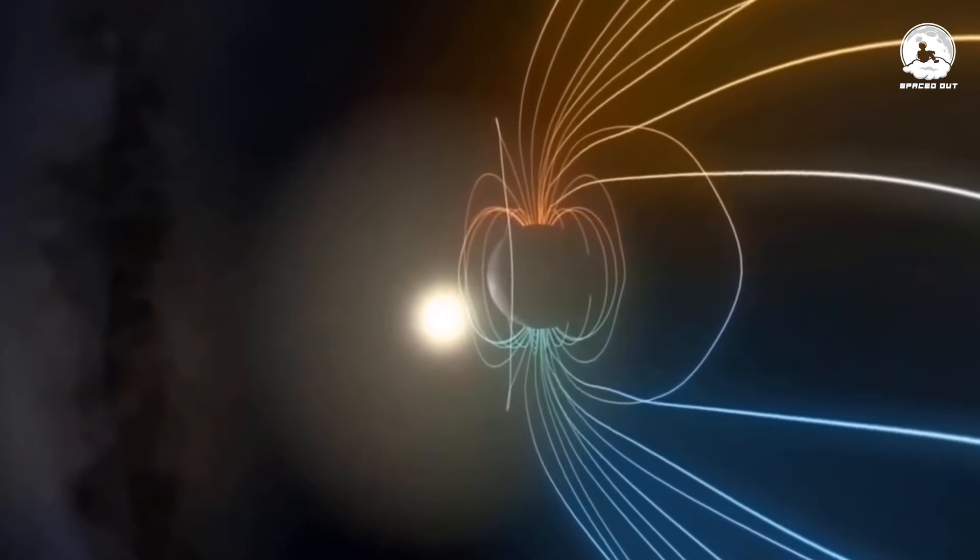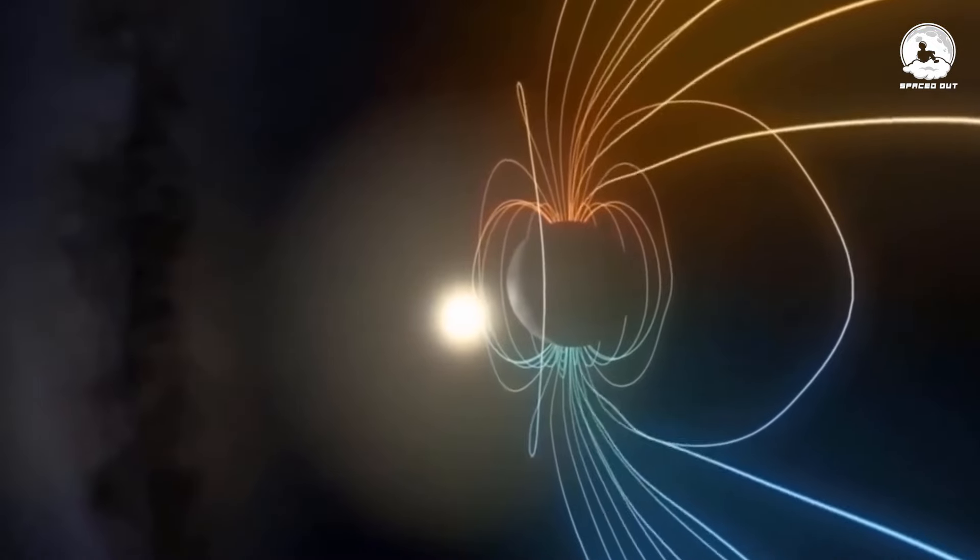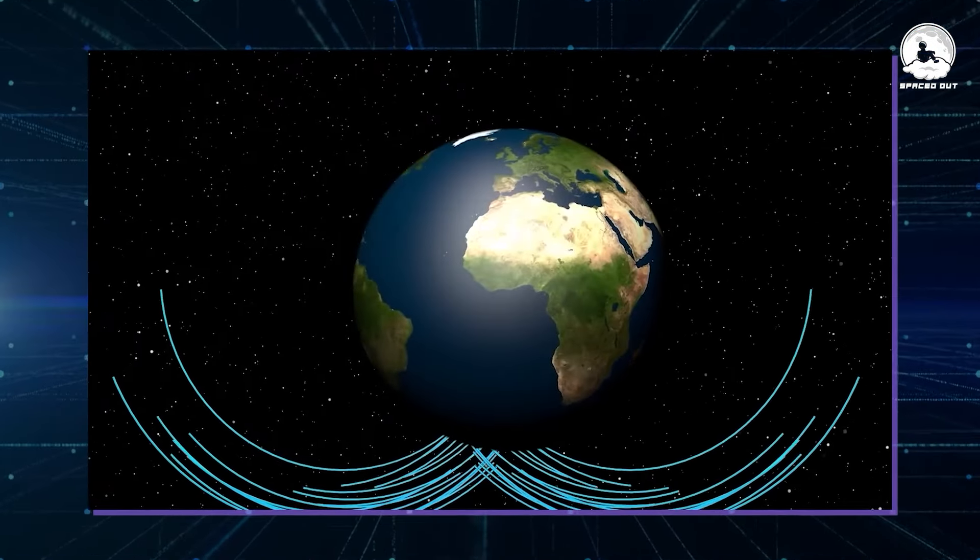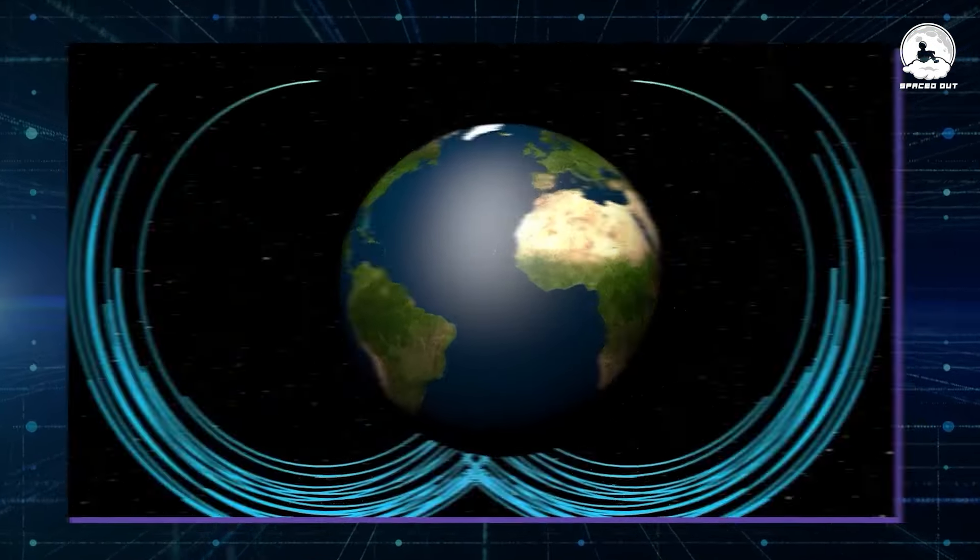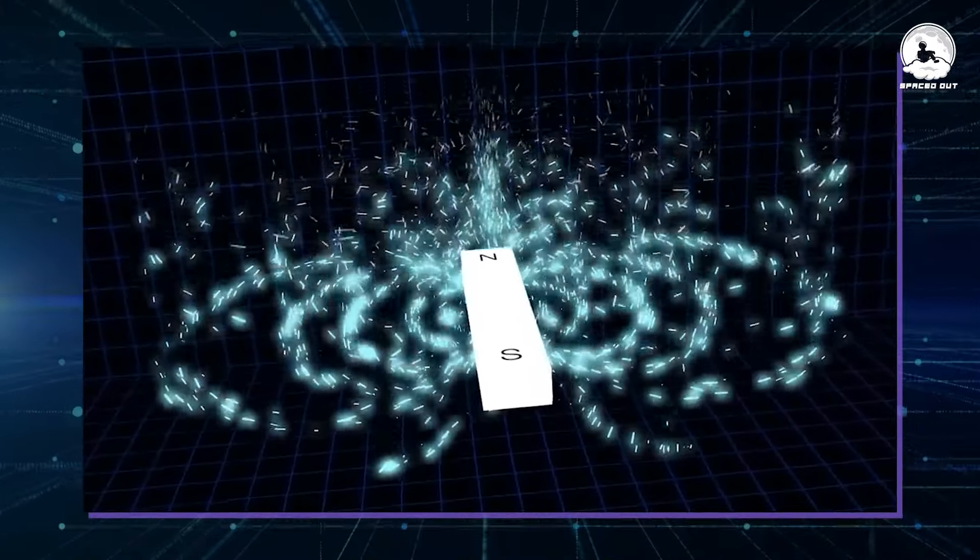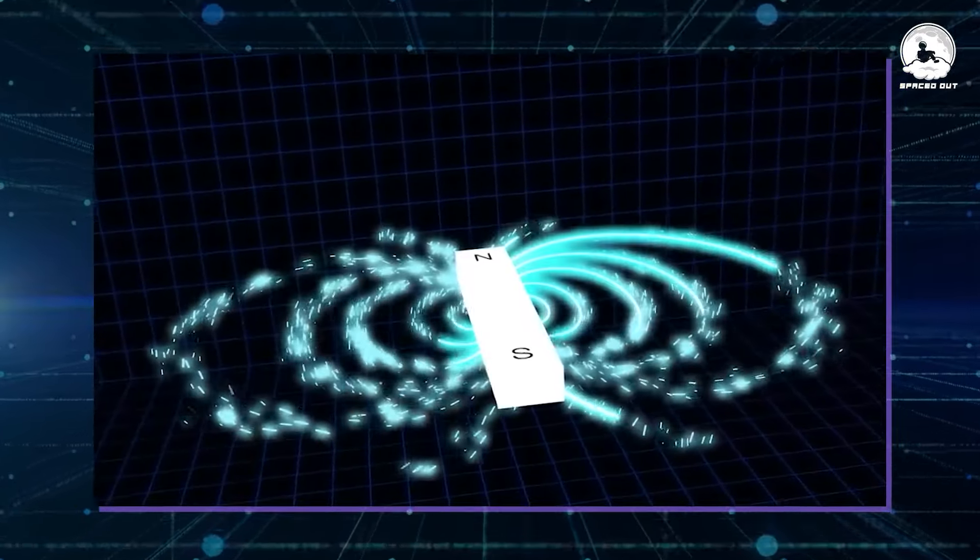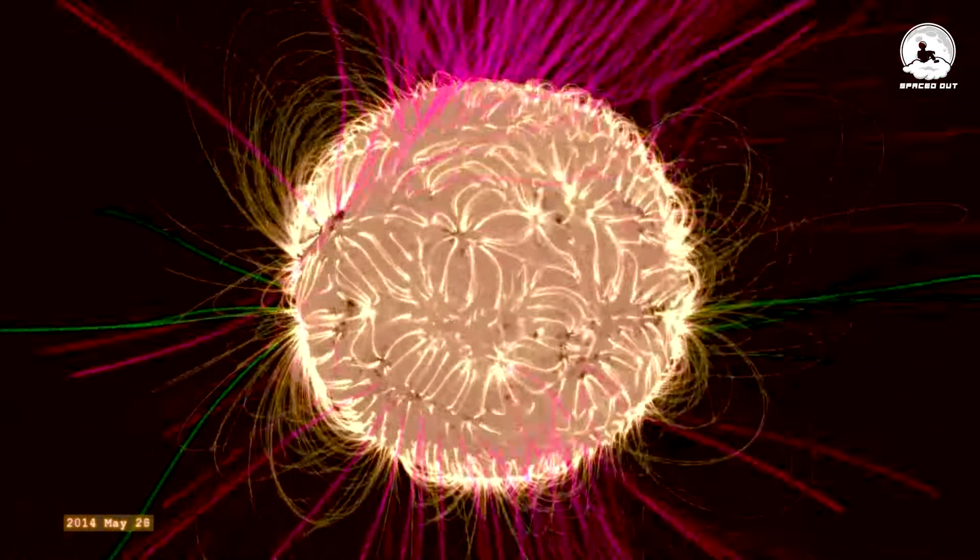The reasons for this variability are complex and not fully understood. During a reversal, the magnetic field weakens and becomes disordered, with multiple North and South poles emerging at various locations around the planet. This phase is known as the reversal transition.